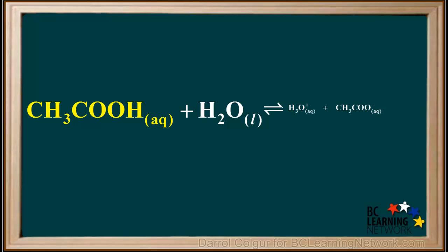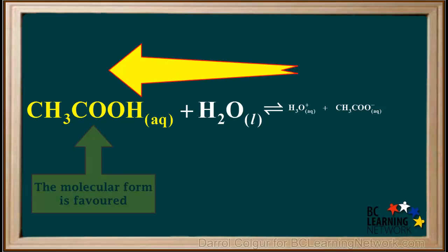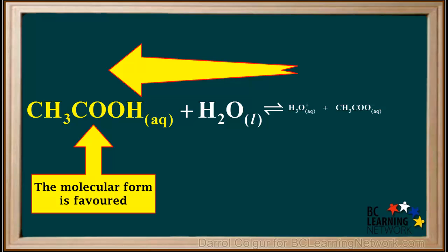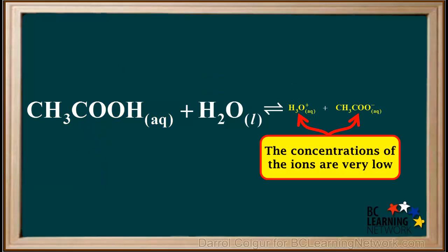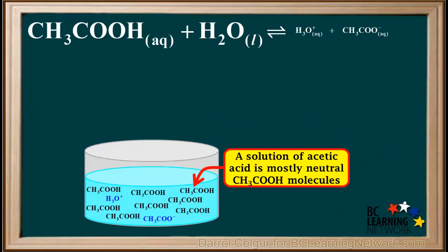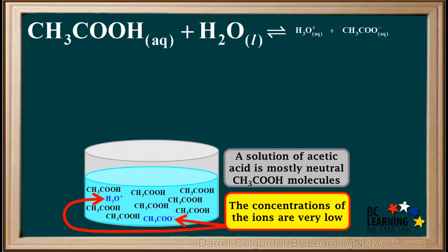For most of the weak acids dealt with in Chemistry 12, the molecular form is highly favored at equilibrium, and the concentrations of the ions are very low compared to that of the molecules. So a solution of acetic acid consists mostly of neutral CH3COOH molecules, and the concentrations of the ions in this solution are very low.